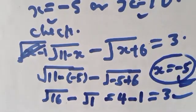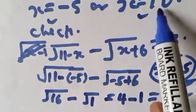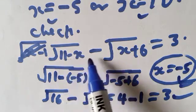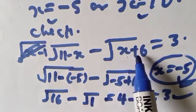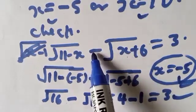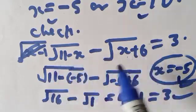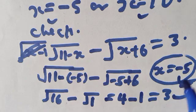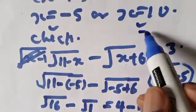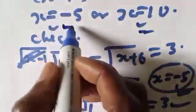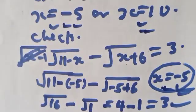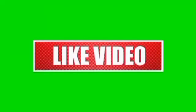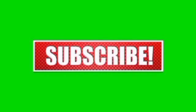Now checking X equals 10: square root of 11 minus 10 equals square root of 1 equals 1, and square root of 10 plus 6 equals square root of 16 equals 4. So 1 minus 4 equals minus 3, which does not equal 3. Therefore X equals 10 does not satisfy the equation, and our final answer is X equals minus 5. Thank you, please don't forget to like, share, comment and subscribe.